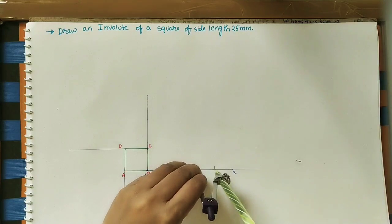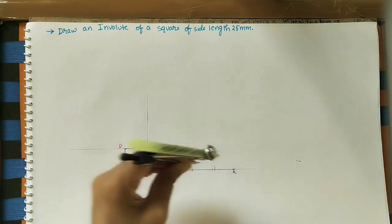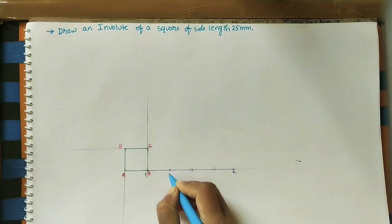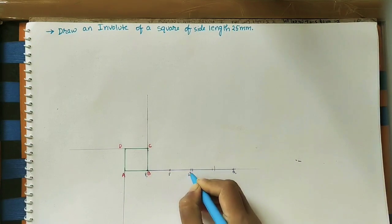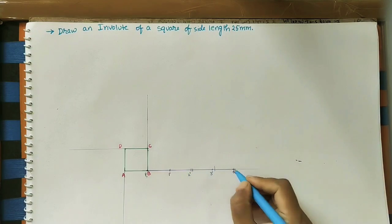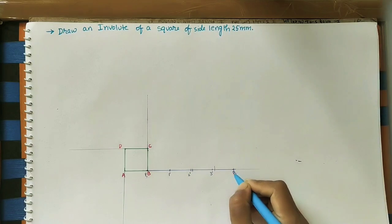This is the third one, and this is the fourth one. Label the intersection points as 1', 2', 3', and 4'. The Q point is also the 4' point.